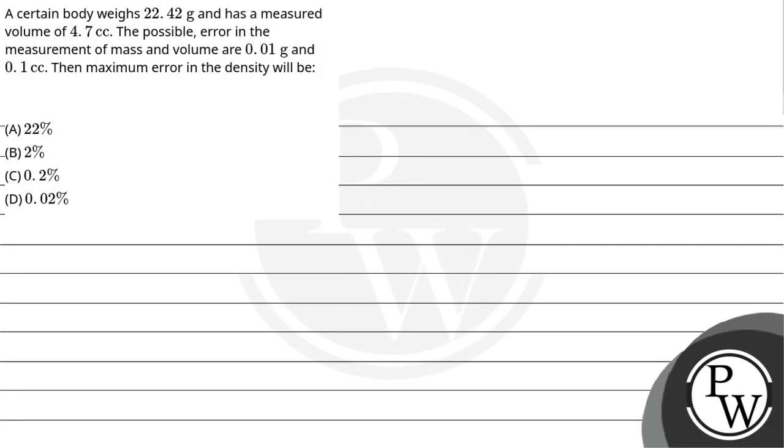Hello, let us read the question. A certain body weighs 22.42 grams and has a measured volume of 4.7 cubic centimeters. The possible error in the measurement of mass and volume are 0.01 grams and 0.1 cc, then find the maximum error in the density.